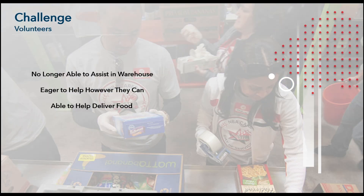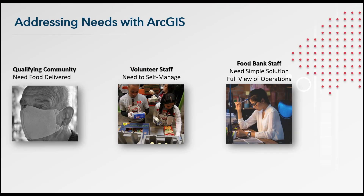Although volunteers are no longer able to assist in the warehouse, they are eager to help however they can, and they are able to help deliver food. Addressing the needs of the community with ArcGIS, we can help the qualifying community get food, help volunteers self-manage their deliveries and take the weight off the shoulders of the admin staff, and help the staff respond to the community and see the full delivery operation.